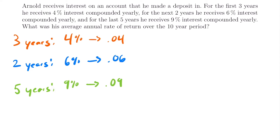We want to find an average annual rate of return for a 10-year period — three years plus two years is five, plus another five years gives us ten total. So we write our equation as (1 + i)^10 on the left side. This represents an average interest rate for the 10-year period equivalent to having all these different rates. Like before, we take each rate, add one to it, and multiply them together to solve for i.